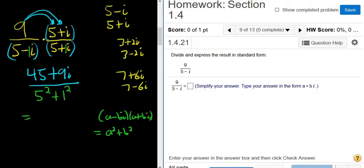So we end up with 45 plus 9i over, and then 5 squared is 25, and then 1 squared is 1.